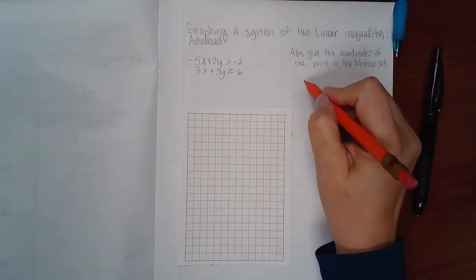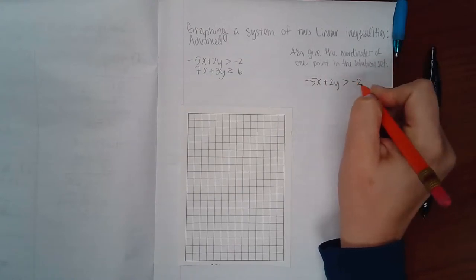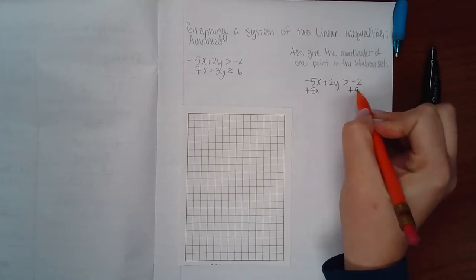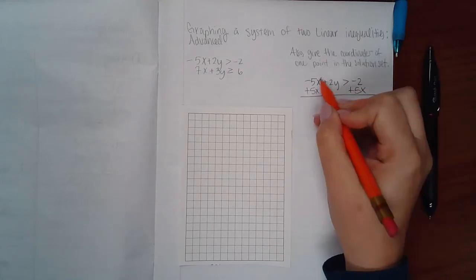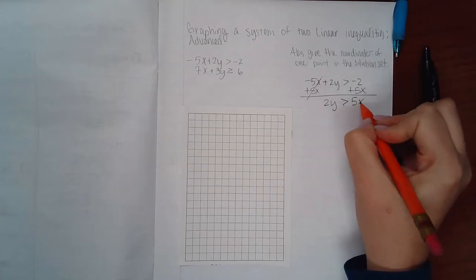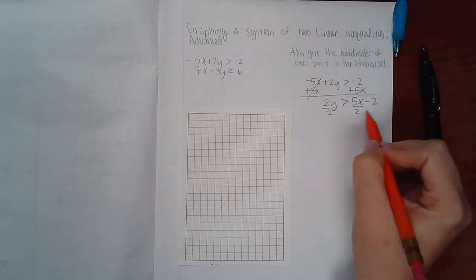The first thing I need to do before I can graph is rewrite each inequality so that I can graph it. I'm going to add 5x, and remember the rule with inequalities: you solve them just like you do equations, except if you have to divide by a negative then the symbol will flip over.